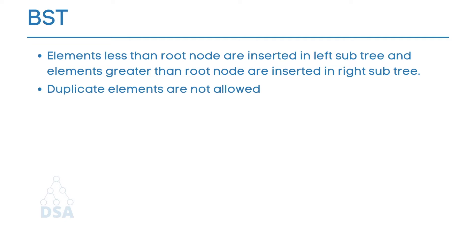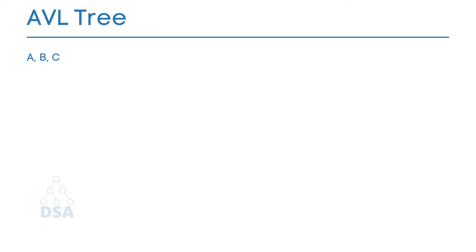Now let's see AVL tree insertion, starting with RR rotation. Suppose we have to insert elements A, B, and C. First we insert A as a root node. After insertion of every element we calculate the balance factor, which is the height of the left subtree minus the height of the right subtree. Since A has no left or right subtree, its balance factor is 0, which satisfies the AVL rule, so it is balanced.